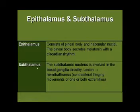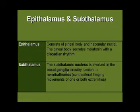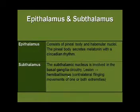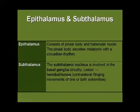The subthalamic nucleus is a major indirect basal ganglia pathway structure, and an isolated lesion of it — usually in a hypertensive patient — results in a contralateral hemiballismus. This results from a less active indirect basal ganglia pathway and a more active direct basal ganglia pathway.